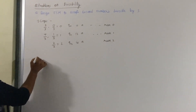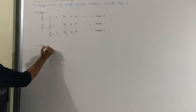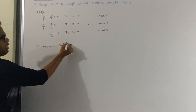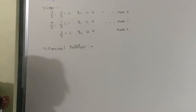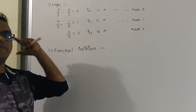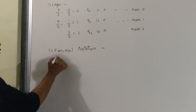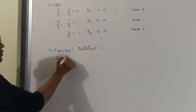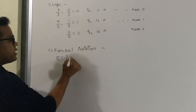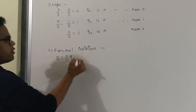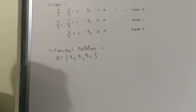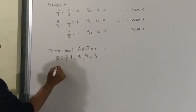Now my second step will be formal notations. To design any automata, we are going to use 5 formal notations to represent the complete automata. The first formal notation is Q. Q is a set of all states in the automata. We know there are only 3 states, so Q equals the set {Q0, Q1, Q2}. It is a finite set.